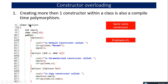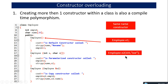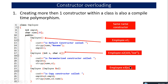Which constructor is executed is selected based on the parameters passed. When I write 'employee e1' inside main, creating an object with no arguments, the default constructor is executed. When I pass two values like the employee id and name, the compiler finds the constructor with two matching arguments and executes it. If I pass an e2 object of employee class, it calls the copy constructor. This is constructor overloading.